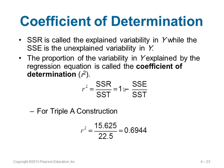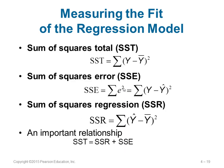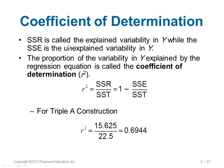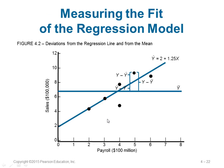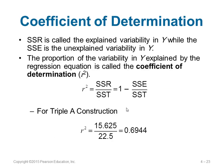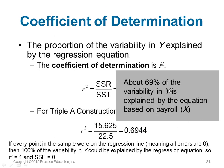SSR is called the explained variability in y, while SSE is called the unexplained variability. SSE is between y and the predicted value; SSR is between the predicted and the mean value of y. To find the coefficient of determination, which is r², we use SSR / SST. For Triple A Construction, r² = SSR / SST = 0.69. This means 69 percent of the variability in y is explained by the regression equation.